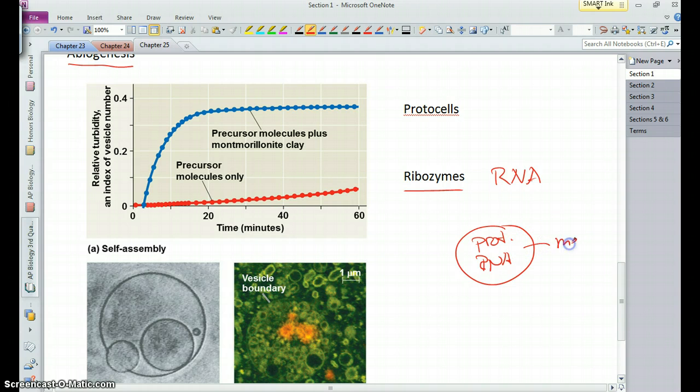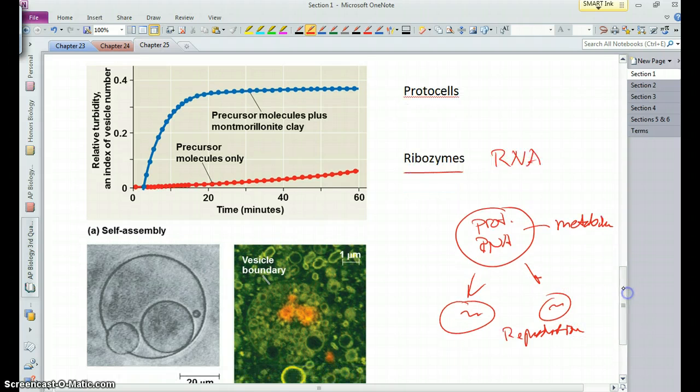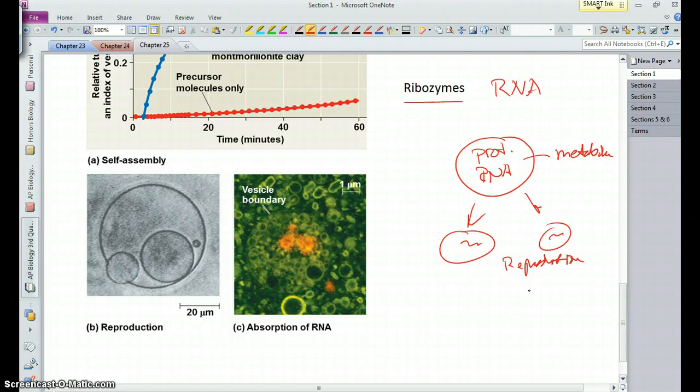It begins to have sort of a primitive type of metabolism. And when that thing sort of can split into two, you begin to have a primitive type of reproduction. And so now you have something, again, that resembles a living thing, this protocell.